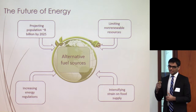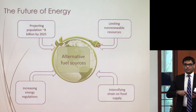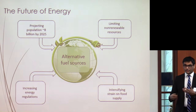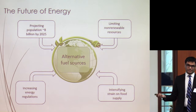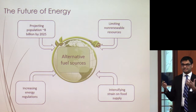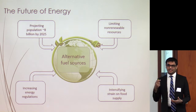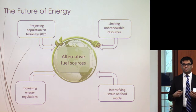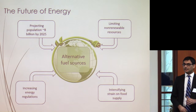Coupled with that, worldwide governments are increasing energy regulations. They want more efficient and eco-friendly energy resources. One of those is bioethanol — producing ethanol from biosources. The major product right now is corn-based bioethanol. But that has another problem: it causes a strain upon the food supply. All of these points lead to one major problem — we need an alternative fuel source that will solve all of these issues and provide us with energy.